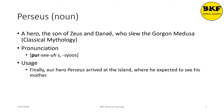Perseus is a noun. He was a hero, the son of Zeus and Danae, who slew the Gorgon Medusa. There are multiple pronunciations to this. Here's the usage: 'Finally, our hero Perseus arrived at the island where he expected to see his mother.'